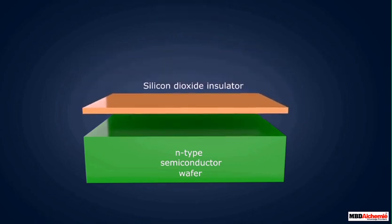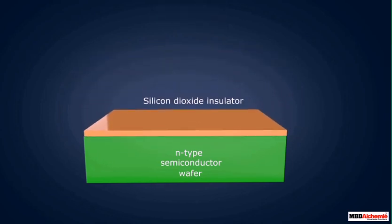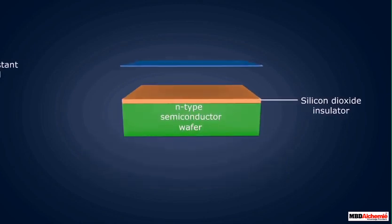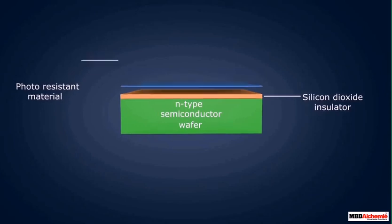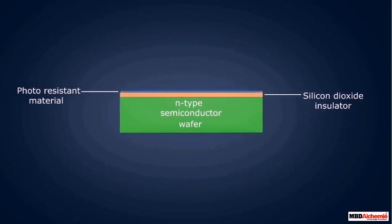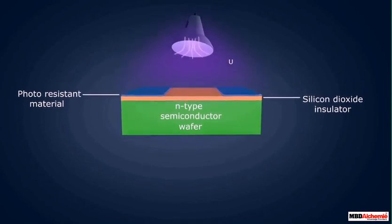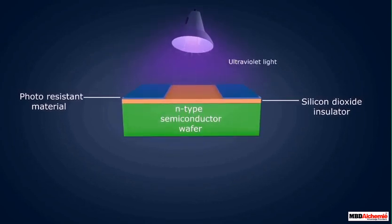To manufacture ICs, the photolithography technique is used. First, a layer of silicon dioxide insulator is coated over the semiconductor wafer. Then a thin layer of photo-resistant material is placed over the silicon dioxide. After this, masking is done and ultraviolet light is made incident on it. Wherever the light is incident over the photoresistive portion, it becomes hard and no chemical reaction can take place over it.